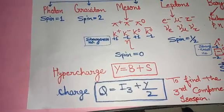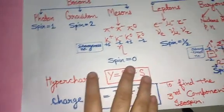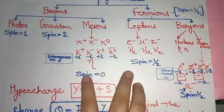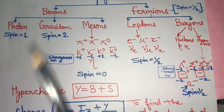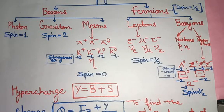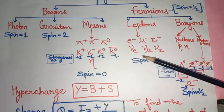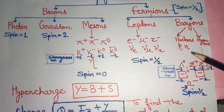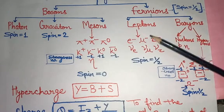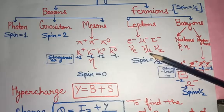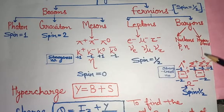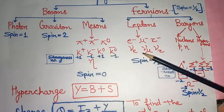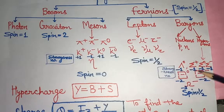You need to remember which particles belong to which category. We have divided them into two main categories: bosons and fermions, and further subcategories. For leptons, the lepton number exists. For baryons, the baryon number exists and will be +1. Strangeness numbers we have already discussed.